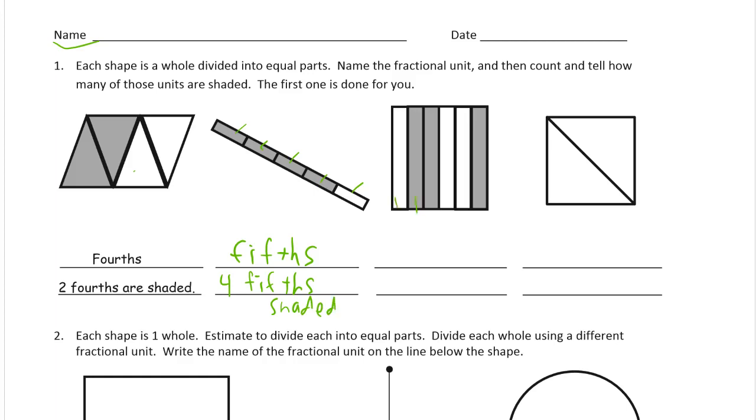This is one, two, three, four, five, six equal pieces. So these are sixths, which is the most difficult fraction to pronounce. Sixth of those. And we see there's one, two, three of them shaded. So three sixths.